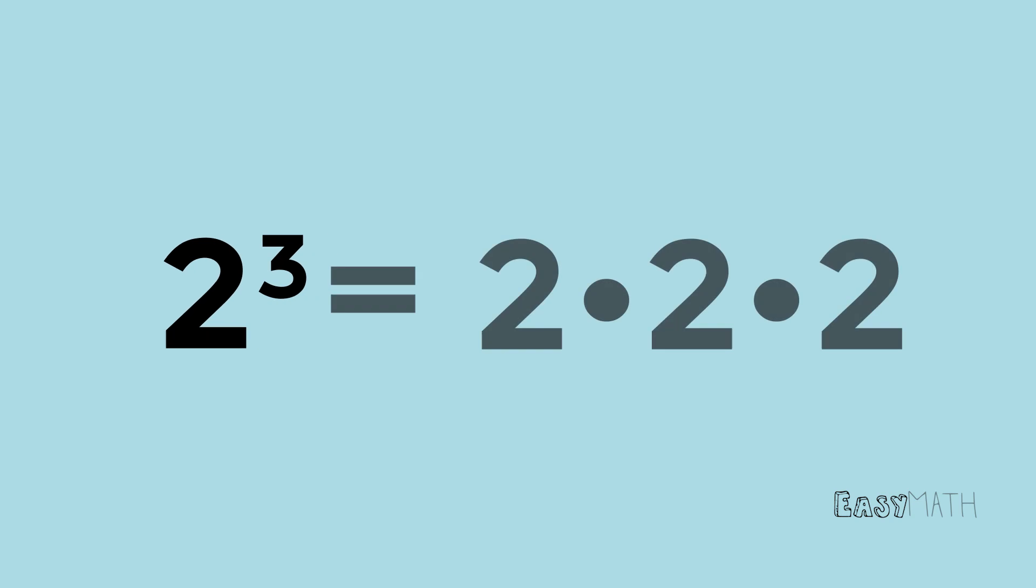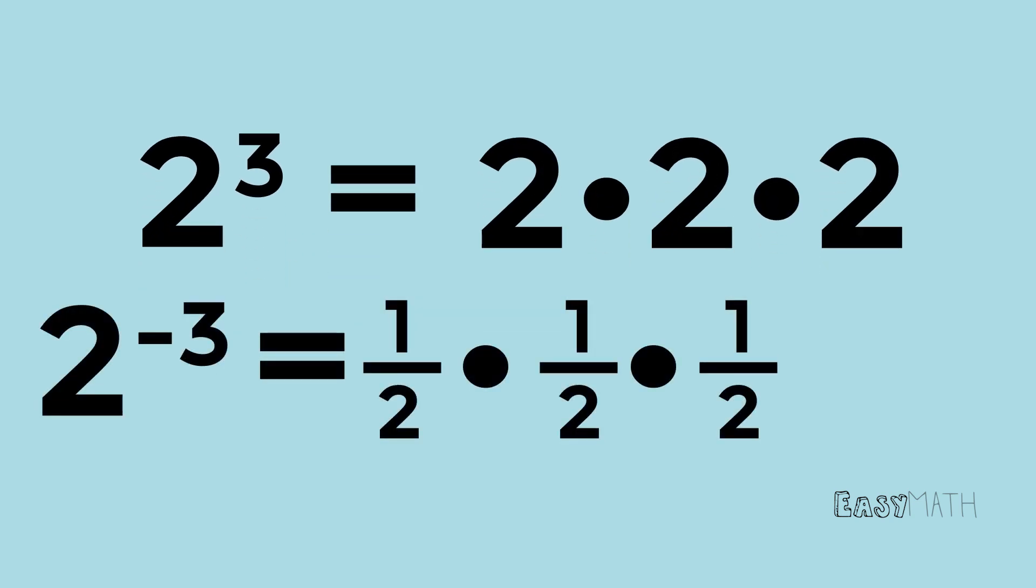We can also have negative exponents, which work slightly differently. For example, 2 to the negative third power is just 1 over 2 multiplied by itself 3 times.